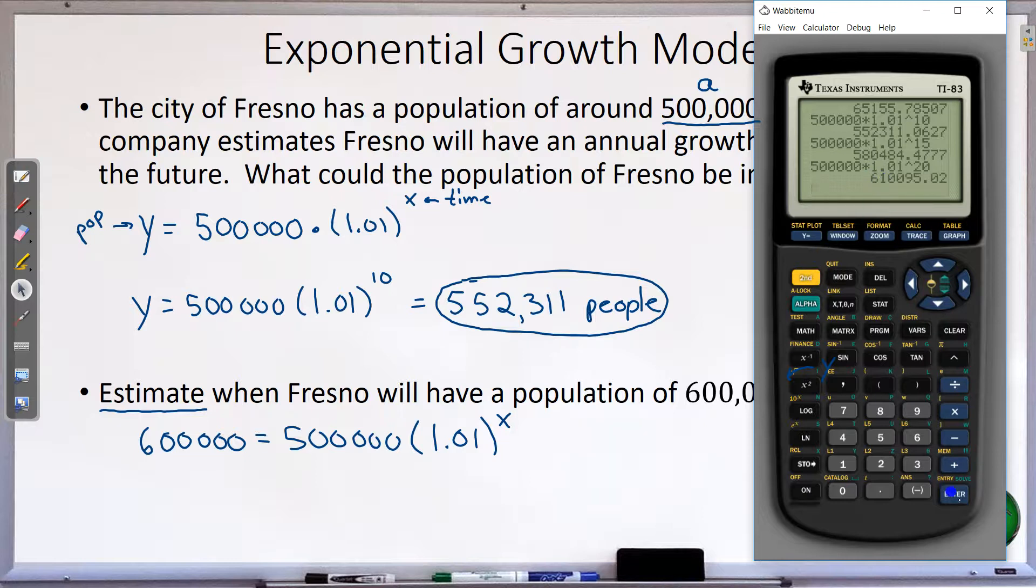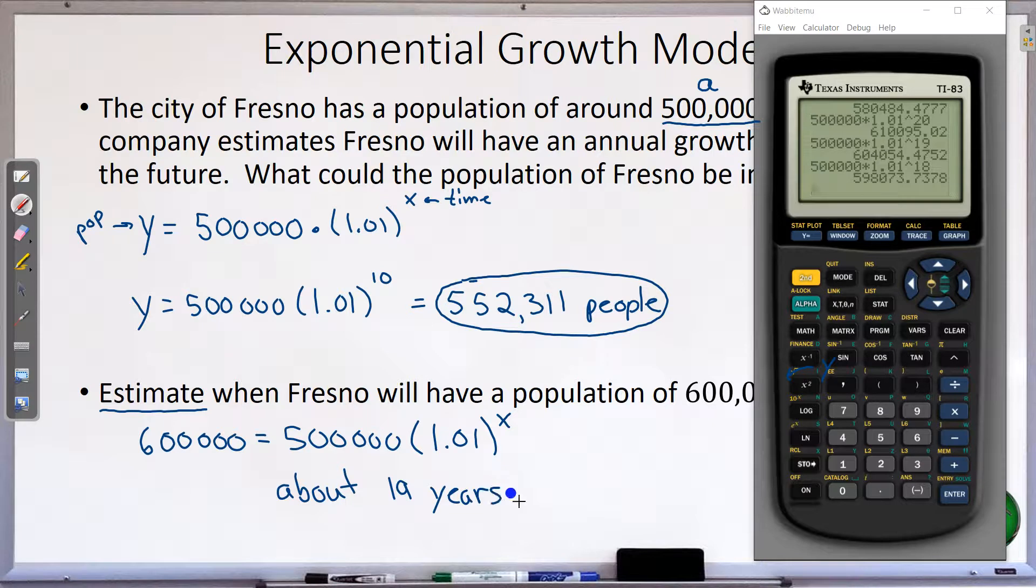Ah, there we got to 600,000, but I'm a little too high, 610. I'm going to back up a year. So instead of 20, let's try 19. Does that get me to 600,000? There I'm at 604,000. Can I back it up one more year to 18 years? Ah, see there I'm not quite there. I'm at 598,000. So it looks like I have to go 19 years to get up to 600,000. Is it exact? No, because it's 604,000. It's not exact, but it's about 19 years. And later, we'll be able to solve this equation exactly, but for now, we can only estimate. Alright, so that is our growth rate.